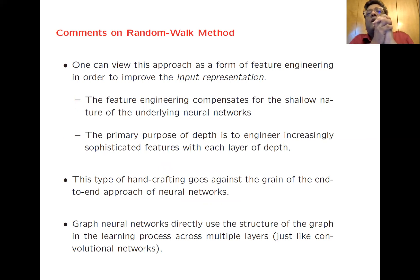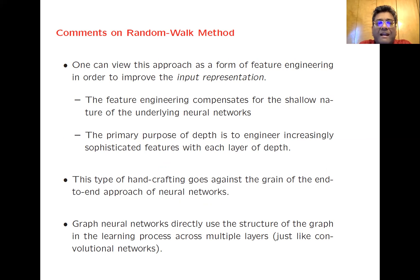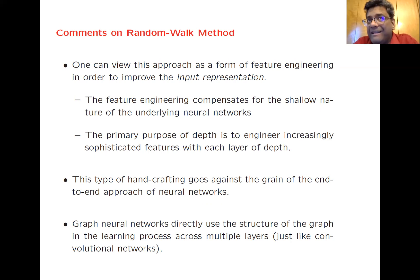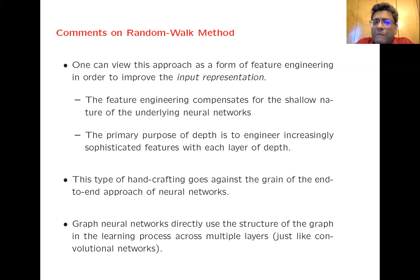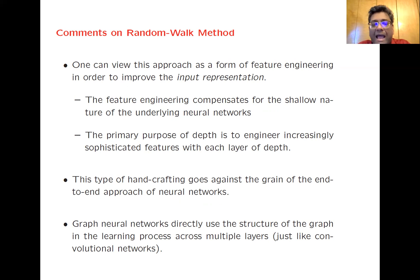One comment on the random walk method is that it is a form of feature engineering done to improve the input representation. What this feature engineering really does is compensate for the shallow nature of the underlying neural networks — the primary purpose of depth in traditional neural networks is to engineer increasingly sophisticated features with each layer, and here random walks compensate for that. It does tend to work quite well — in fact, surprisingly well. There are studies showing it does almost as well as conventional graph neural networks, though that is not a settled issue. The important point is that this type of hand-crafting goes against the grain of the end-to-end approach of neural networks. Convolutional graph neural networks directly use the structure of the graph in the learning process across multiple layers, just like convolutional neural networks on image data, and that will be the topic of subsequent videos in this series.